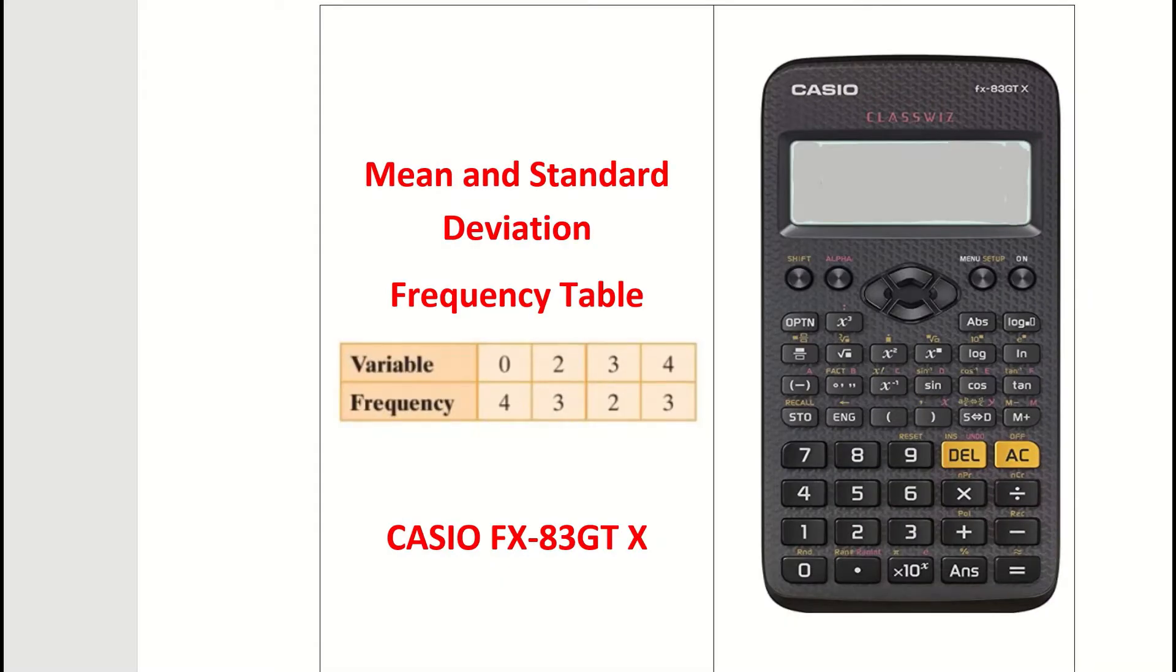In this video we're looking at how to find the mean and standard deviation on our new Casio calculator from a frequency table. If you're looking for how to find mean and standard deviation from just a list of numbers, check out our second video for that.